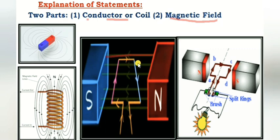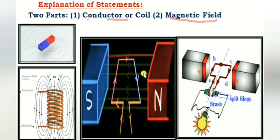The magnetic flux direction is always from north to south. When a coil is placed under the influence of the magnetic flux, the magnetic flux linking with this coil changes.